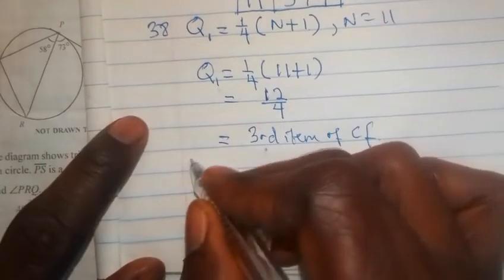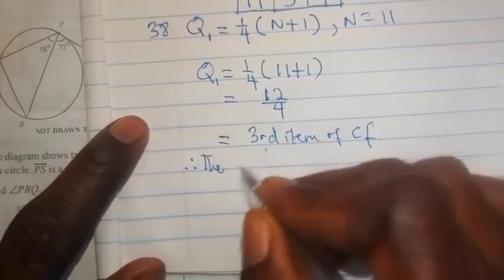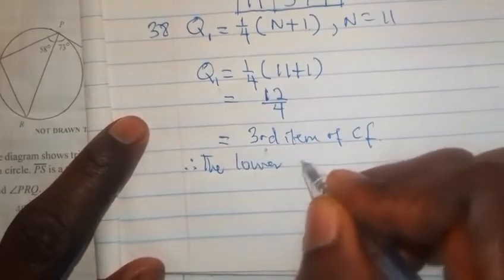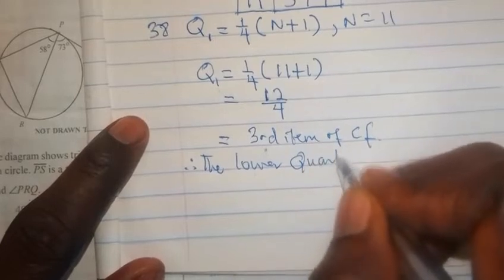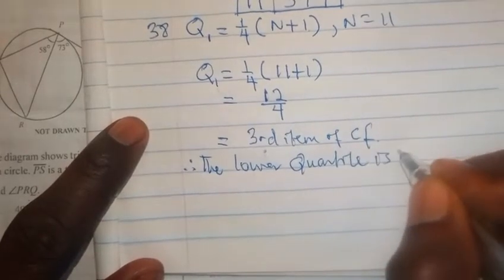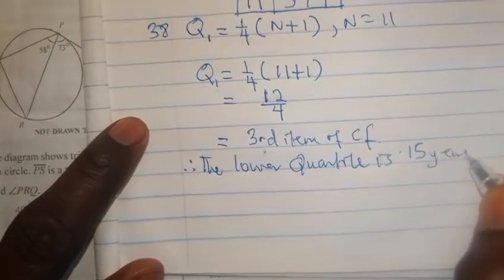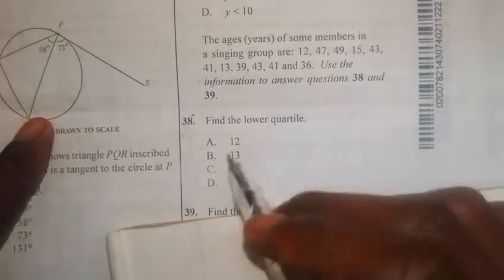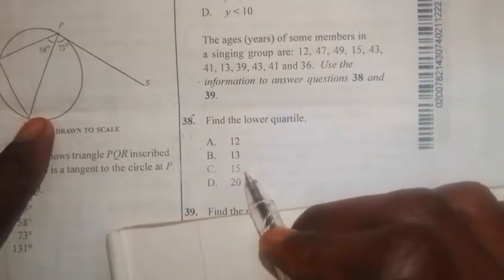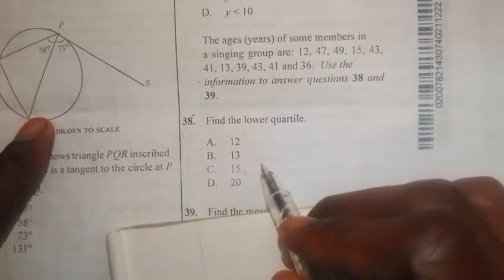So, you come here to say, therefore, the lower quartile is what? Is 15. That is 15 years. So, if we go to the option, you will see that we have what? 15. Alright? So, option C is the right answer.